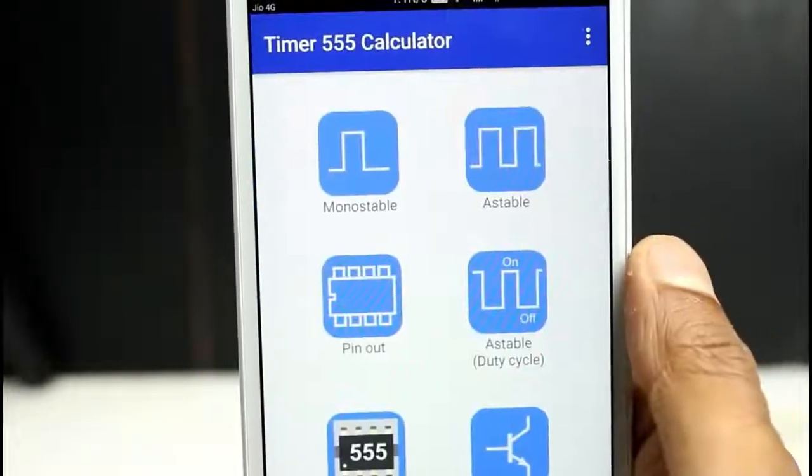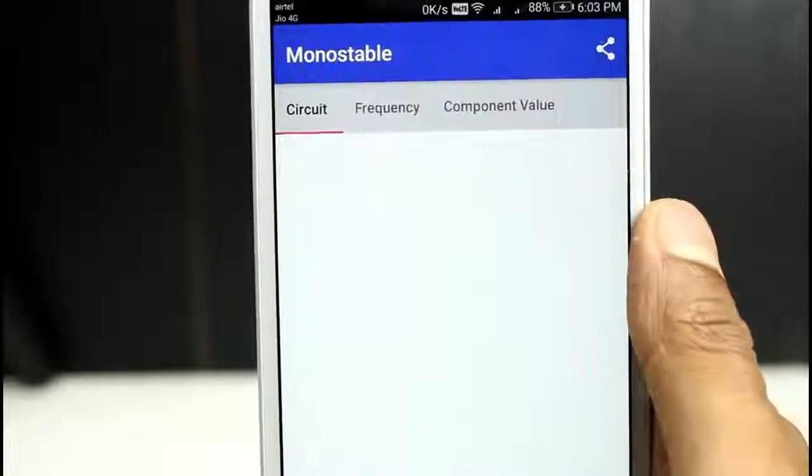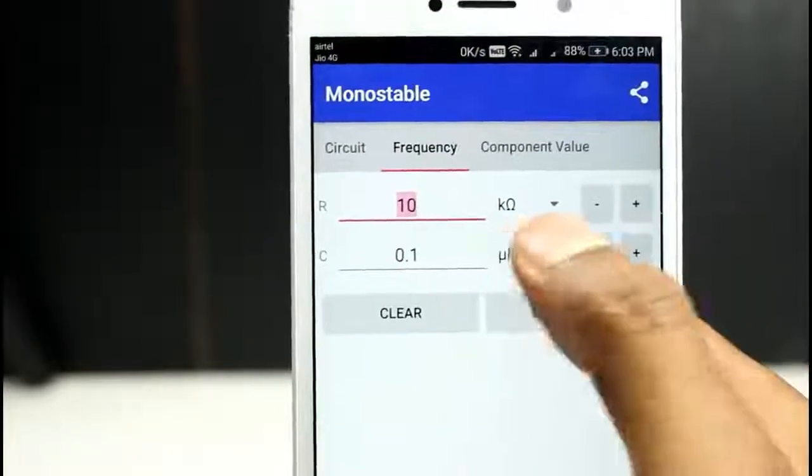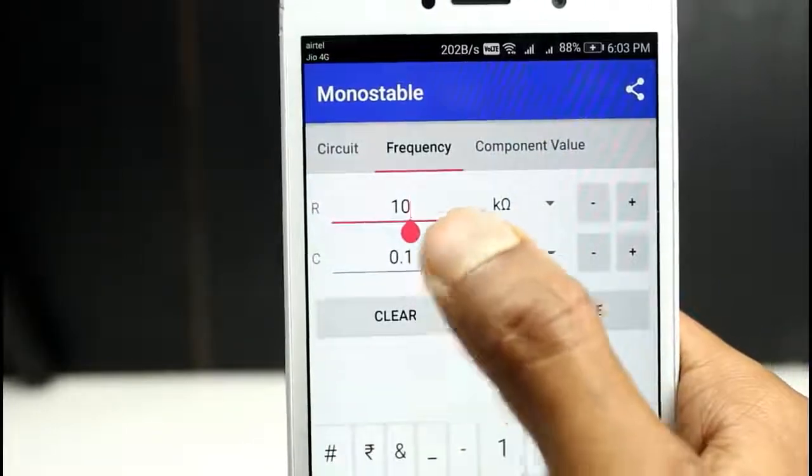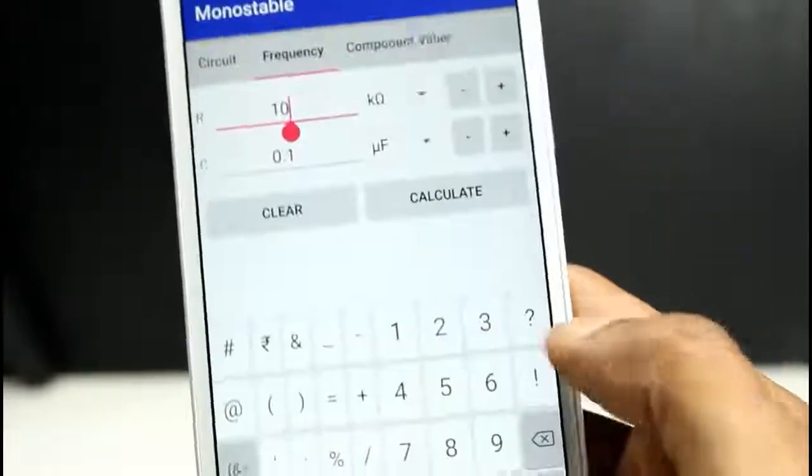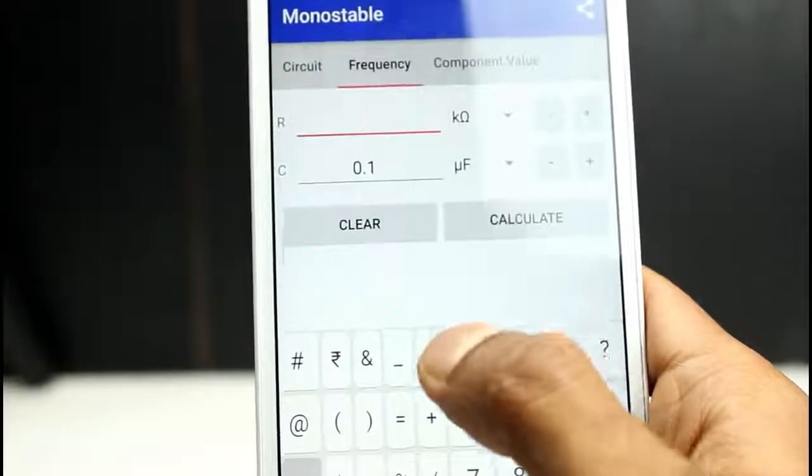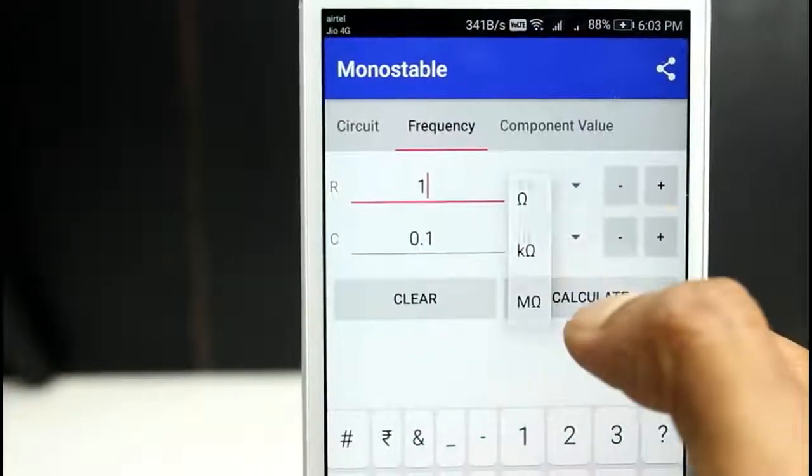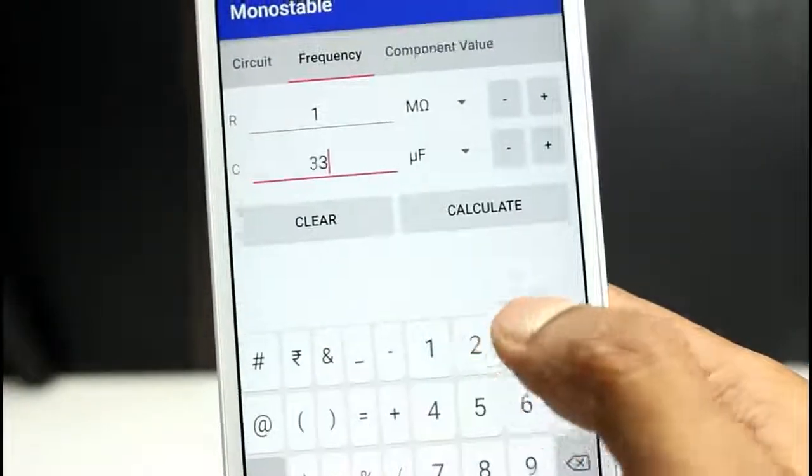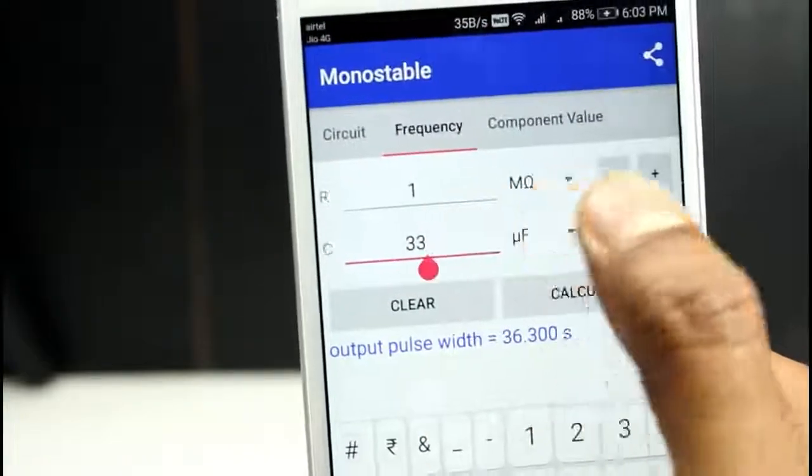Now open the app, click on monostable mode, now click on the frequency. Here you can change the resistor and the capacitor and you will get your desired time. Now here I set it to 1 mega ohm and the capacitor rating is 33 microfarad so you can get 36 seconds.